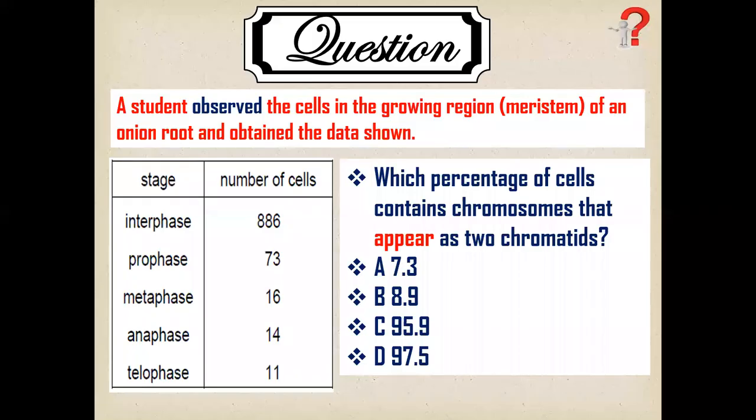A student observed the cells in the growing region of an onion root and obtained the data shown in the table. Which percentage of the cells contained chromosomes that appear as 2-chromatids?